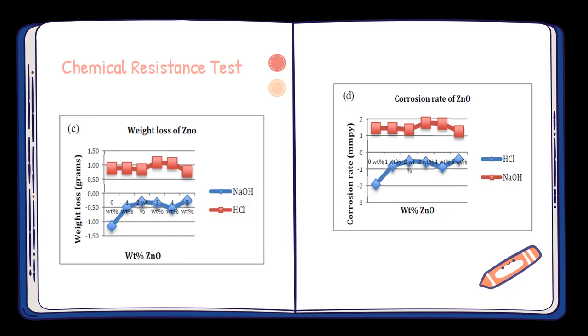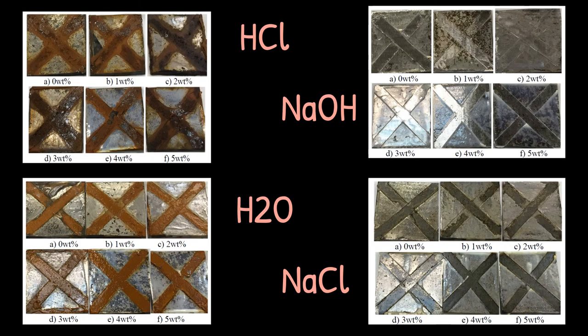When using the chemical resistance test, we obtain the graph as highlighted here. The mild steel was subjected to a chemical environment whereby the coupons were immersed in acid and alkali. This is to study the strength and durability of the coating, as well as the type of environment in which the coating may fail or delaminate. The appearance of mild steel in hydrochloric acid, sodium hydroxide, water, and sodium chloride were observed.